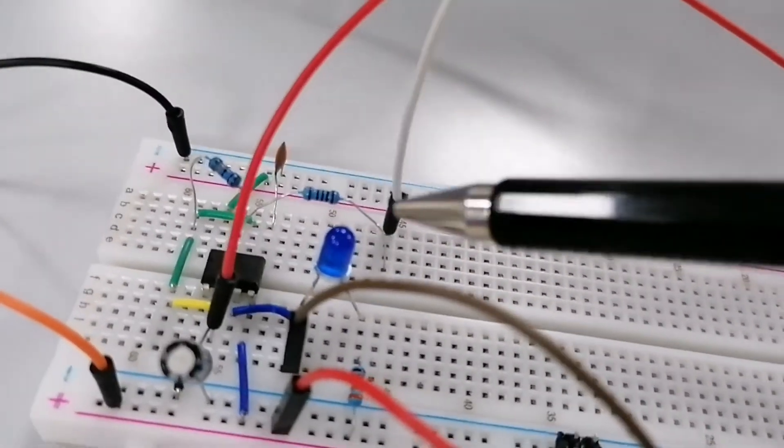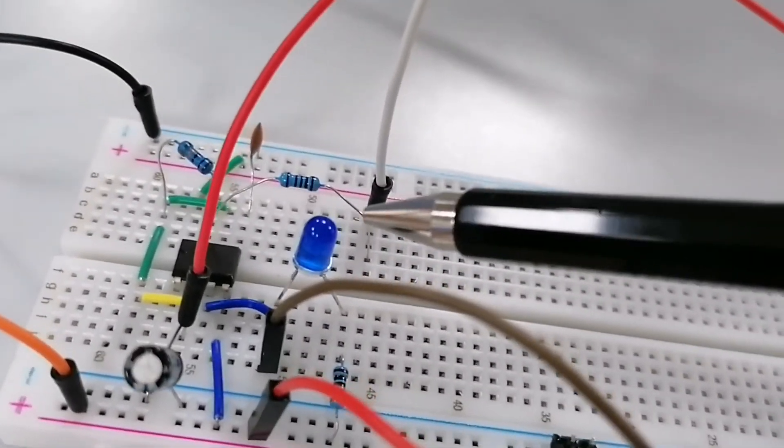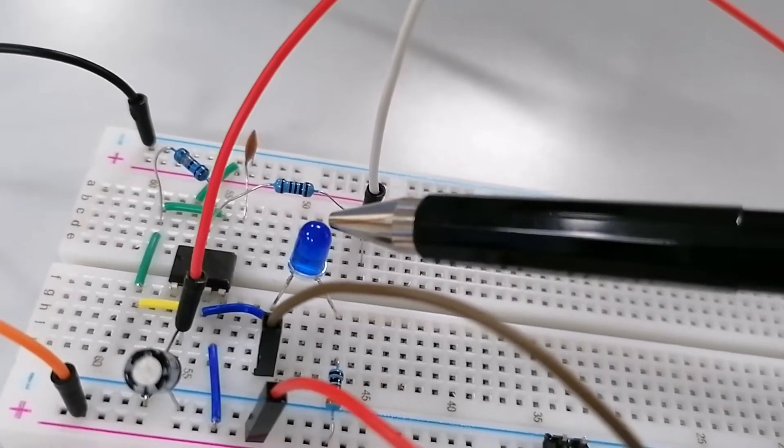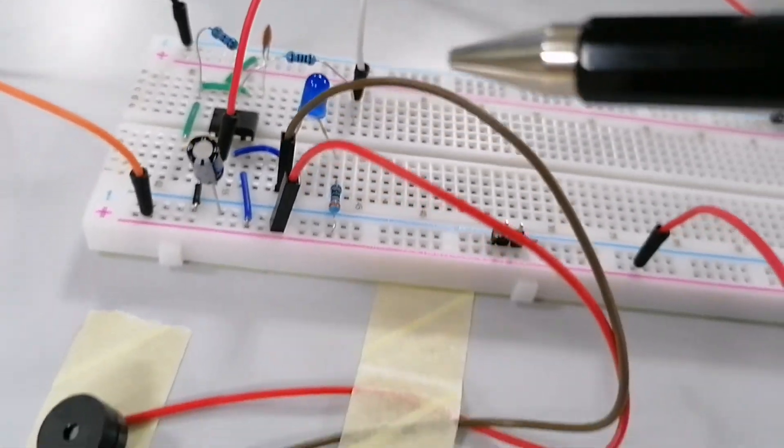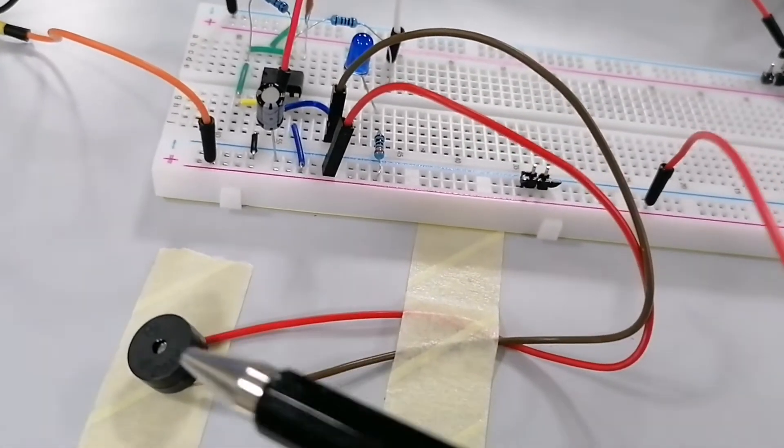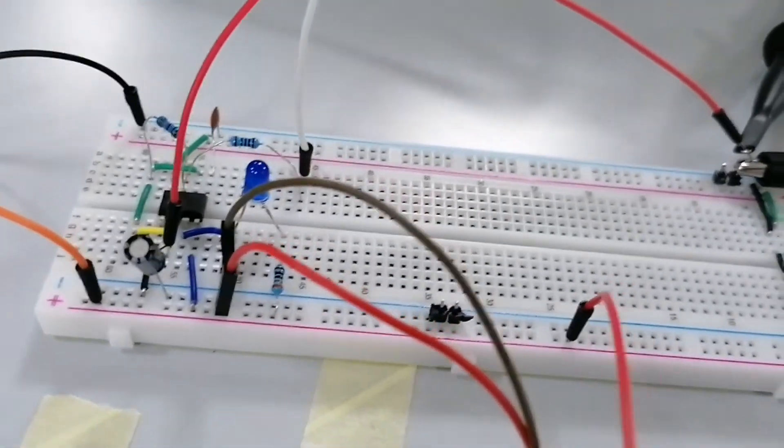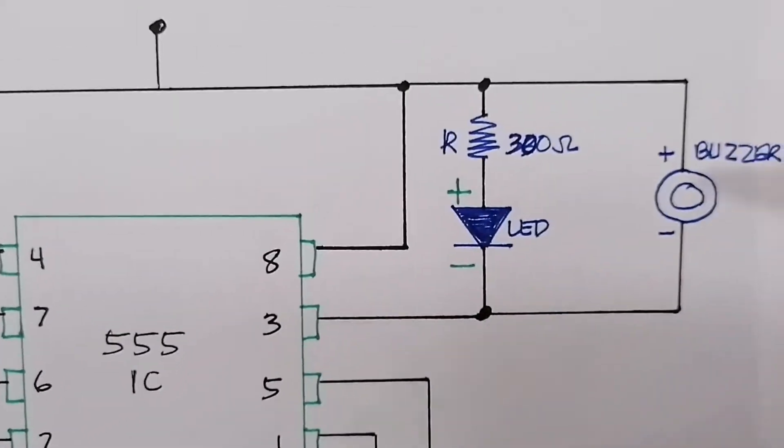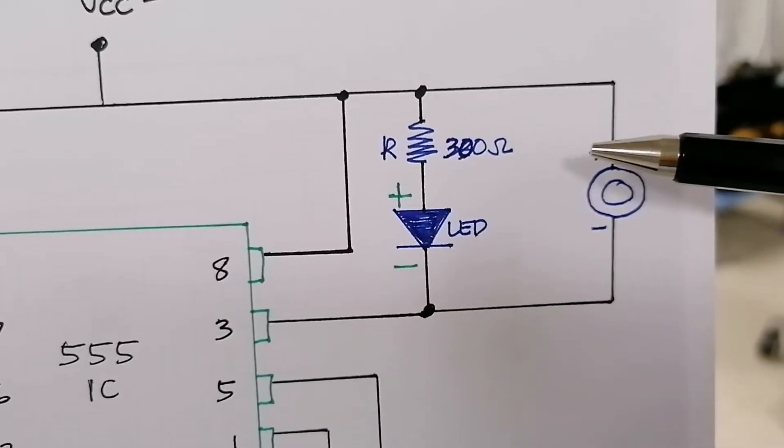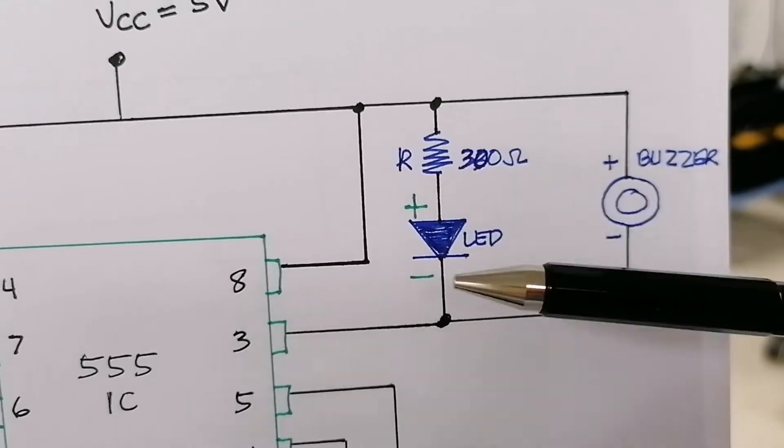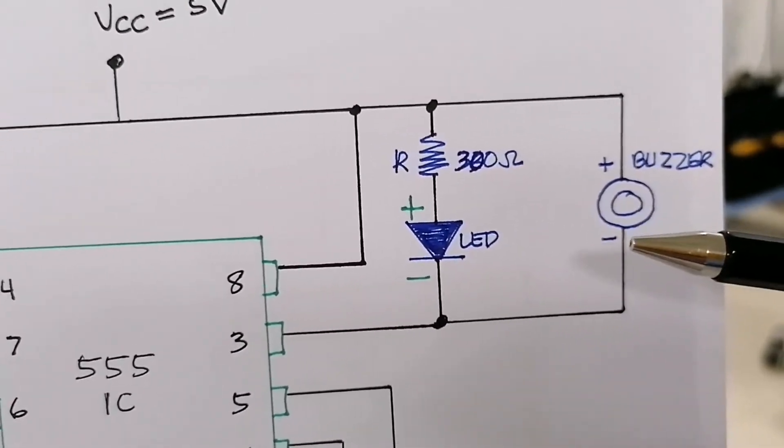And this is my indicator. This indicator is connected parallel to my buzzer. This is my buzzer. As you can see in the circuit diagram, the buzzer and the LED, they are connected in parallel.